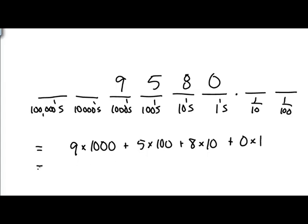plus zero times one. Also known as nine thousand, plus five hundred, plus eighty, plus zero, or nine thousand five hundred and eighty. Now that's a little bit redundant to say that nine thousand five hundred and eighty is nine thousand five hundred and eighty.